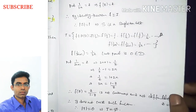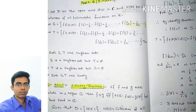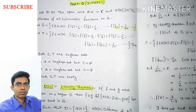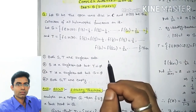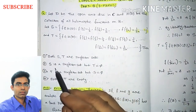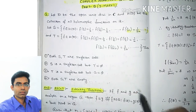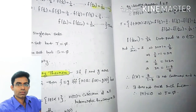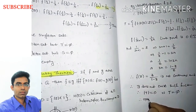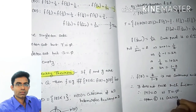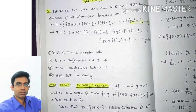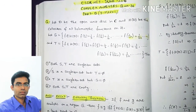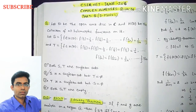Coming to the options: option 1 says both S and T are singleton sets, but T is empty so we discard option 1. The correct option is option 2: S is a singleton set and T is the empty set. We got S is a singleton set and T is an empty set, so option 2 is correct. This is the solution to question number 36. I hope you like this video — please like, share, subscribe, thanks for watching.